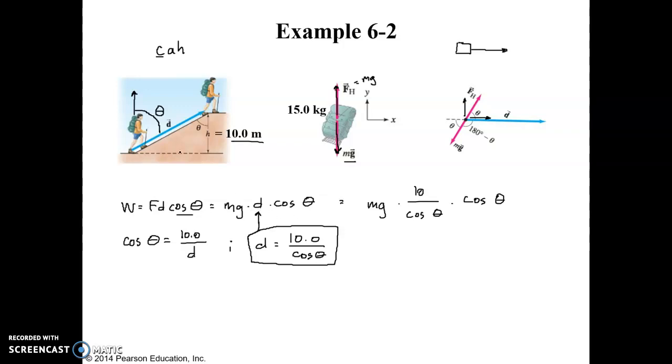But what is that distance d? If we look at this slope he's going up, it makes a right triangle. So for example, we are given that the height he goes up is 10 meters. But then we need to figure out what that length is.